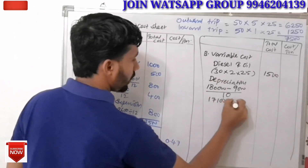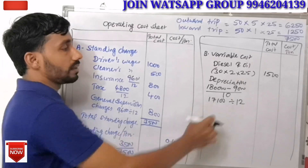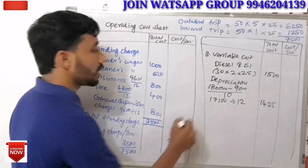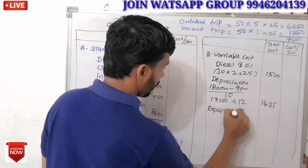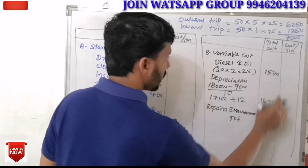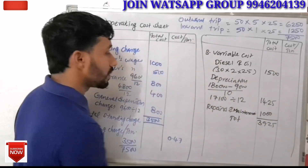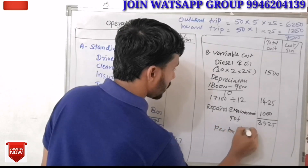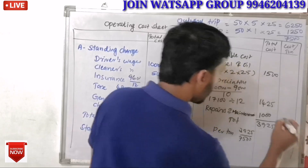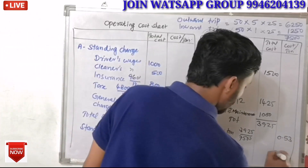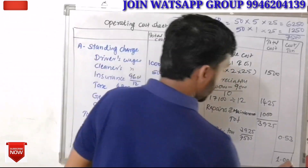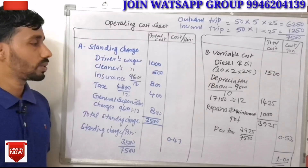This is the yearly depreciation figure. We need to convert the depreciation amount accordingly. The next expense is repairs and maintenance, which is 1,000 per month. We calculate the total variable cost. The total cost comes to 1,000. So that is the answer for the variable cost section.